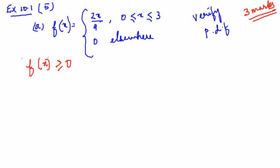Clearly in this equation you know that 2x by 9 is going to be always greater than 0, it is a positive number. So anyway you know the first rule is satisfied.